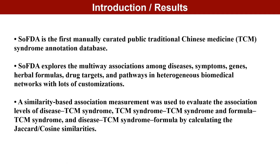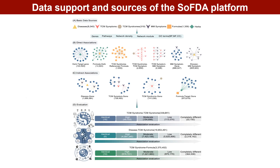To help TCM syndromes better classify diseases and guide tailored medications, we built the first integrated web platform, SOFDA. The SOFDA platform provides detailed information on 8,045 human diseases, 1,610 TCM symptoms, 319 TCM syndromes, and 3,955 genetic information associated with them.